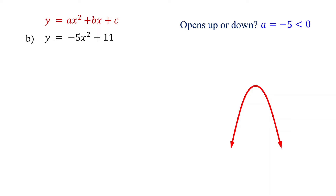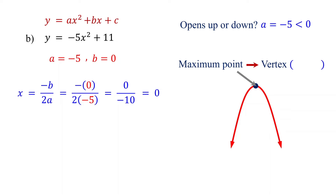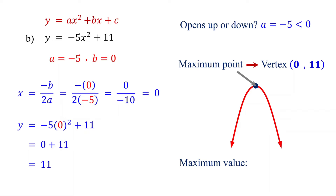When the parabola opens downward, the quadratic function has a maximum point, which is the vertex of the parabola. So next, find the vertex. Find its x-coordinate using x equals negative b over 2a. a is negative 5. Notice that the x-term is missing, which means the coefficient b is 0. Substituting these values into the formula, we find that x equals 0. So the x-coordinate of the vertex is 0. Now, find its y-coordinate by substituting 0 for x into the original function. Simplifying this, we find that y equals 11. So the y-coordinate of the vertex is 11. The maximum value of a quadratic function is the y-coordinate of the vertex, which is 11 in this case. This occurs when x equals 0.